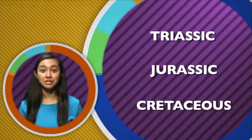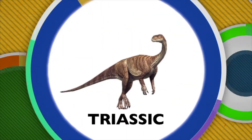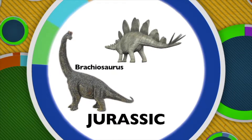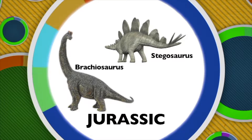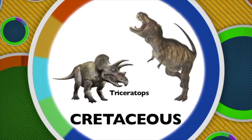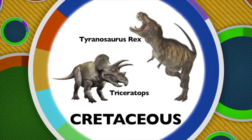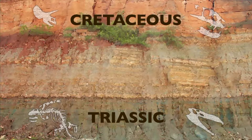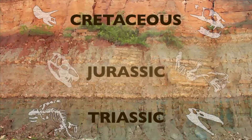Different dinosaurs appeared during different times of the Mesozoic Era. The Mesozoic Era is divided into three periods: the Triassic, Jurassic, and the Cretaceous Period. Paleontologists have found many Plesiosaur skeletons, one of the oldest known dinosaurs. The Jurassic Period is the age of large dinosaurs, like the Brachiosaurus and the Stegosaurus. In the Cretaceous Period lived the Triceratops and the Tyrannosaurus rex. The relative age of a fossil depends on what layer of Earth scientists find the fossil. Older fossils from the Triassic Period are found in lower layers of rock, younger fossils from the Cretaceous Period are closer to the top, and fossils from the Jurassic Period are in between.